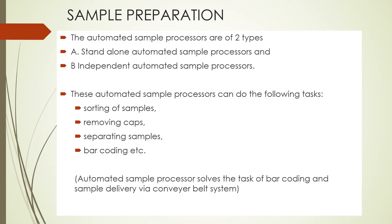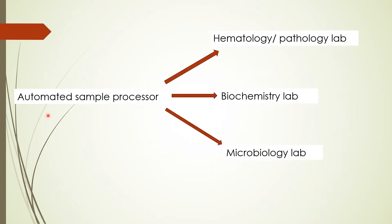Next is sample preparation. The automated sample processes are of two types: standalone automated sample processes and independent automated sample processes. These do the following tasks: sorting of the samples, removing the caps, separating the samples, and bar coding. The automated sample processor solves the task of bar coding and sample delivery via a conveying belt system, and decides whether the sample has to go to the hematology, pathology, biochemistry, or microbiology lab.